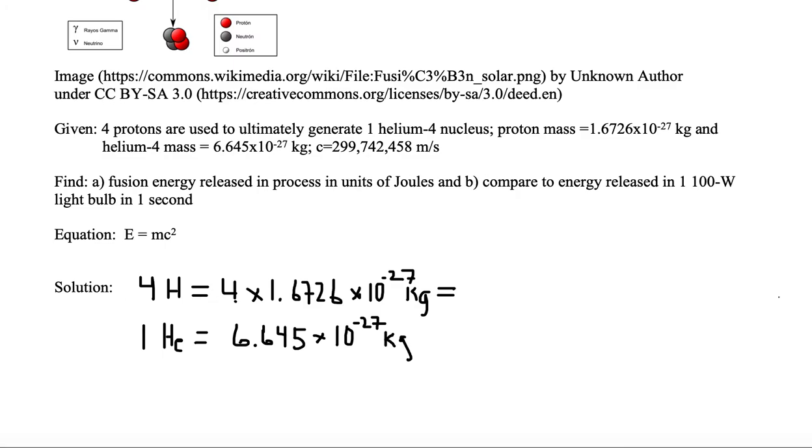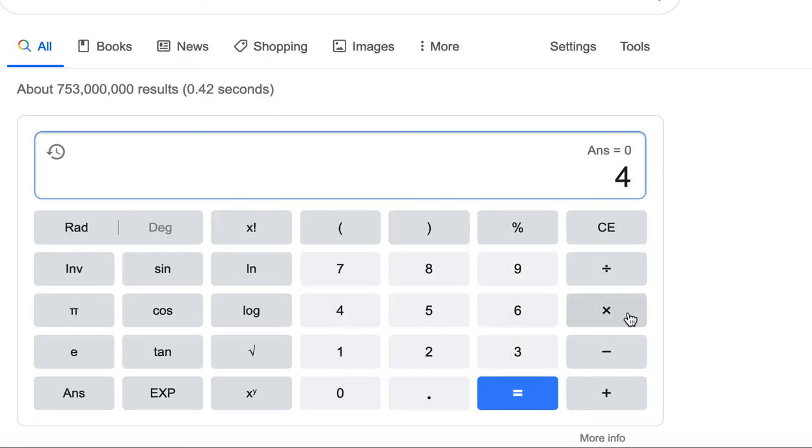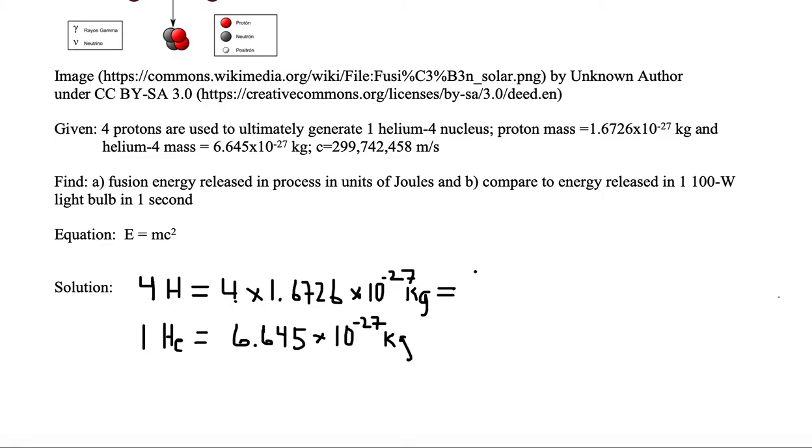So let's go multiply this out. So we need four, so we have four and we multiply it by 1.6726, EE minus 27 kilograms. And we get 6.690 times 10 to the minus 27.